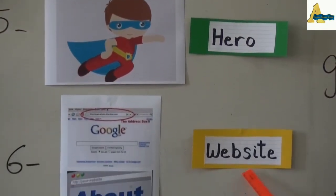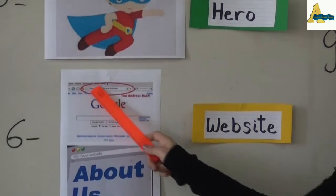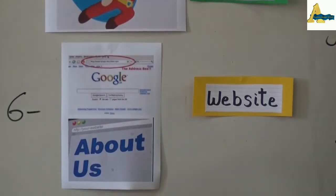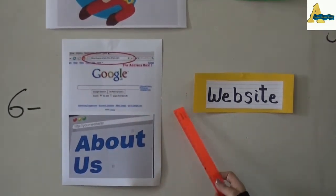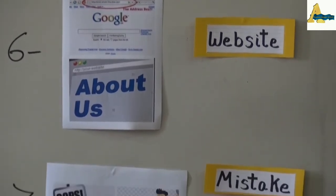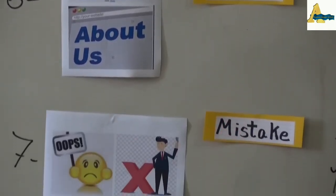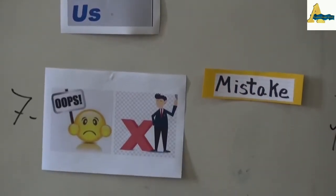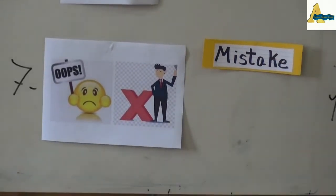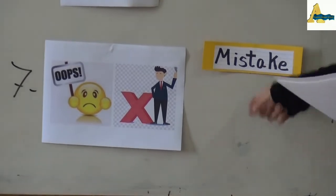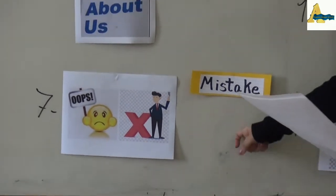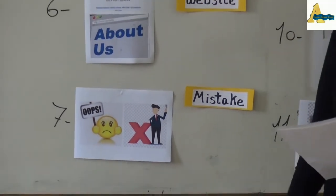Number six, we have website — whatever site or webpage you like. Number seven, we have mistake. When you make something wrong in the exam or the quizzes, you are going to make a mistake — something wrong. It's a fault or error.